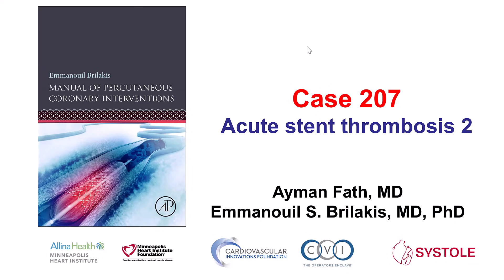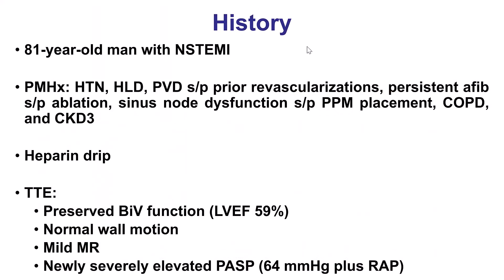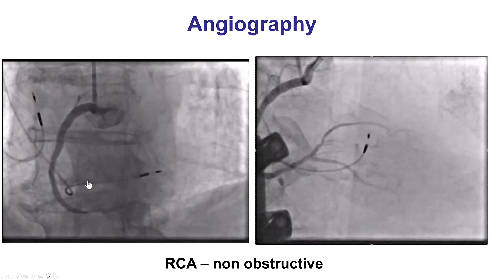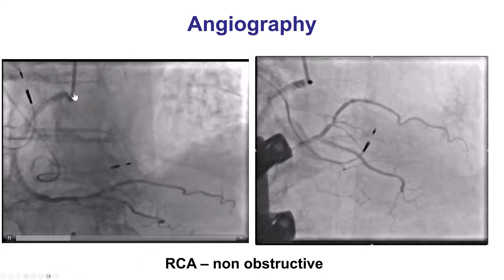This is the second case in the series of acute stent thrombosis. The patient was an elderly gentleman who presented with non-ST elevation myocardial infarction. He did have multiple comorbidities. He received heparin and had normal right and left ventricular function on echo. He was sent for coronary angiography.